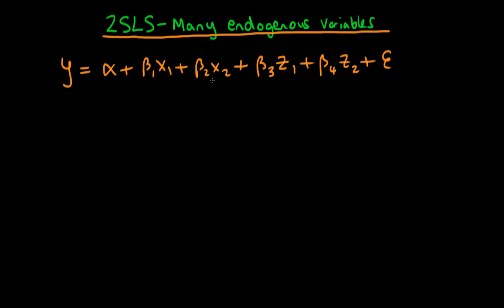So the idea here is that x1 and x2 are correlated with the error, whereas there's no correlation between the error and z1 and z2.